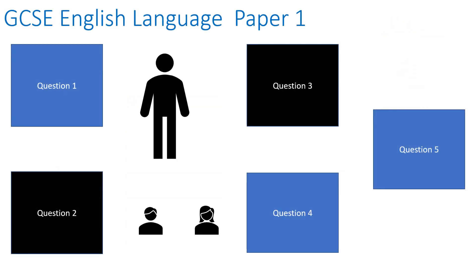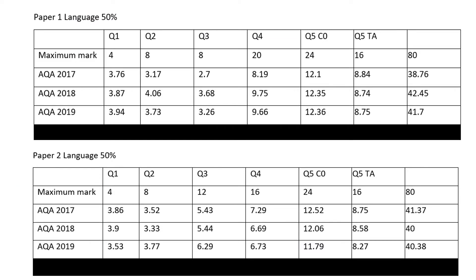A little advice on the paper: when you do the final exam, we suggest that you start with Question 5 first, because you'll be fresh for writing. After an hour of writing for Questions 1, 2, 3 and 4, you'll be a little bit tired and more likely to make punctuation and spelling mistakes. So start with Question 5, then go through the other questions.